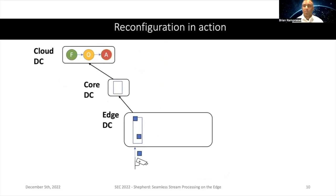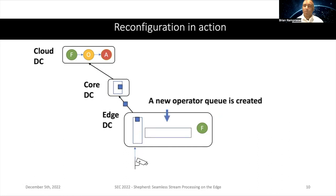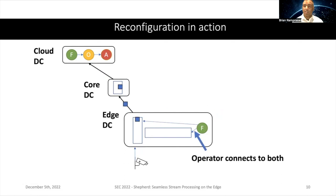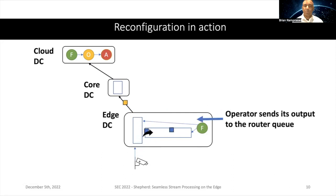Let's see reconfiguration in action. We have this router network between edge, core, and cloud data centers, passing tuples up. When we want to do a reconfiguration, we add the operator but it is not connected to anything — tuples are still flowing toward the cloud. We add queues to feed that operator, then add connections so the filter operator can pass data to these queues. Next, we add a routing rule. When the filter operator is ready to see tuples, data arrives at it, it processes and sends its output through the router network — all without shutting down the flow of data.